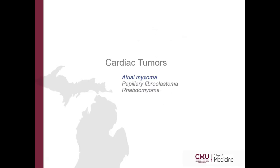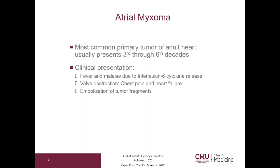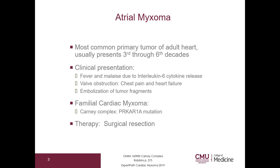Let's start with atrial myxoma. Atrial myxoma is the most common primary tumor of adults, and it usually presents in the 3rd through 6th decades. The clinical presentation is fever and malaise due to IL-6 cytokine release, valve obstruction, and embolization of tumor fragments. Familial cardiac myxoma can be part of Carney complex, which is due to PRKAR1A mutation. Therapy is generally surgical resection.